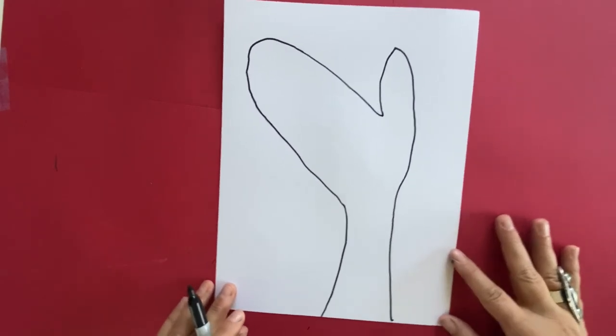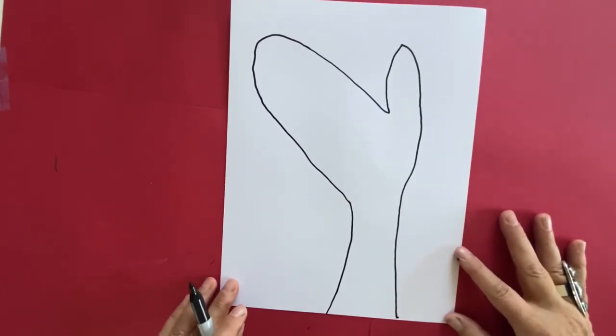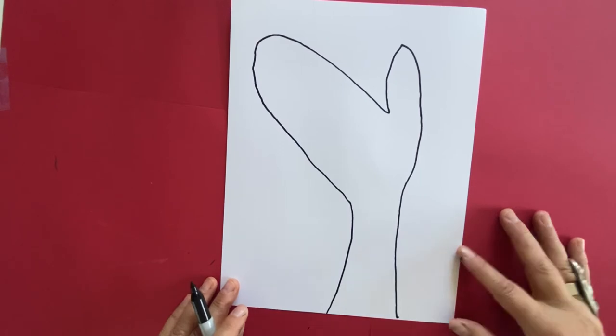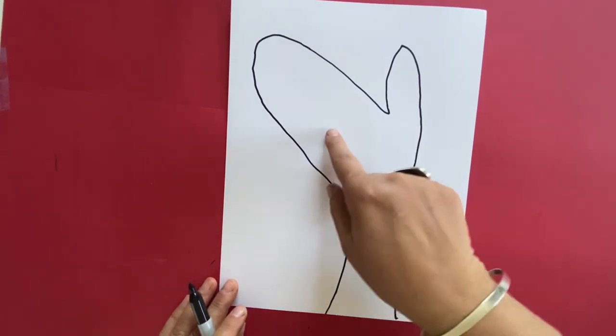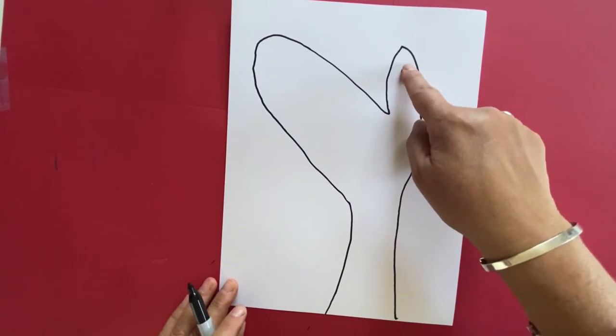Ta-da! Yours should look similar to this. It doesn't have to be exactly like Miss A's. And if you have a copy that the teacher gave you, you should have this in front of you. We're going to start drawing our zebras.